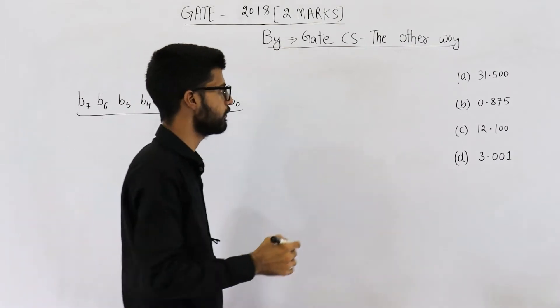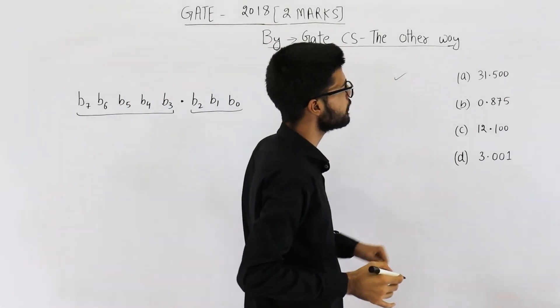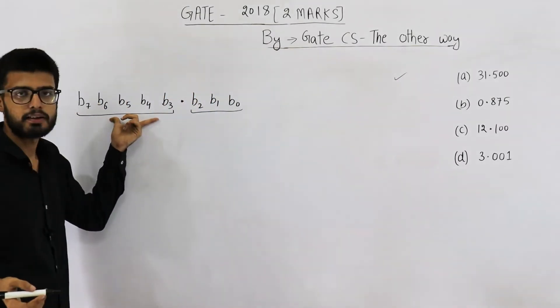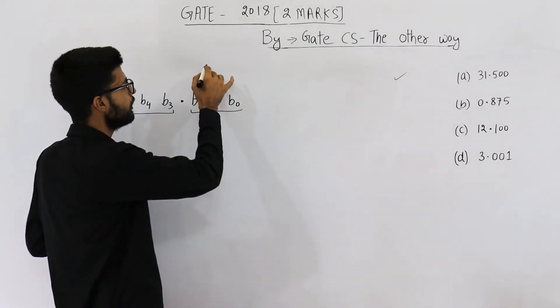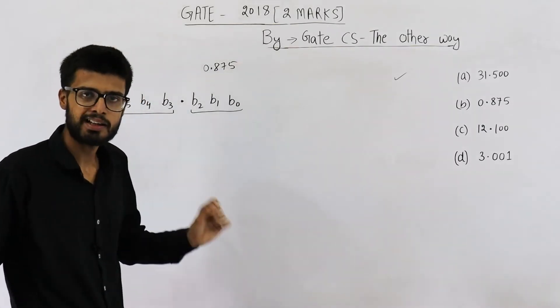So option A, we can represent it. Option B is 0.875. 0 can be represented here. So 0.875, let us check if 0.875 can be represented in three bits.